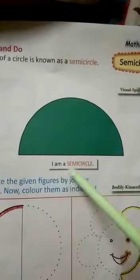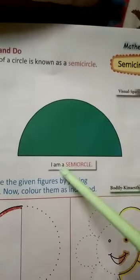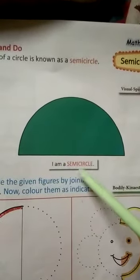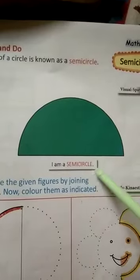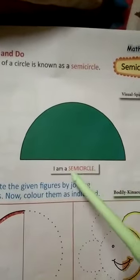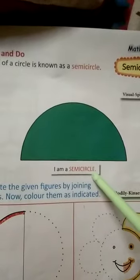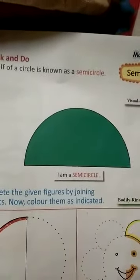I am a semicircle. Spelling: S-E-M-I-C-I-R-C-L-E. Semicircle, S-E-M-I-C-I-R-C-L-E. Semicircle.